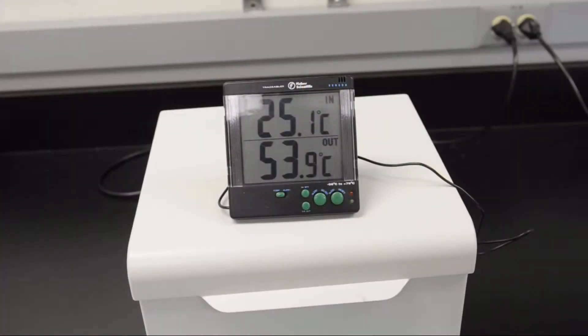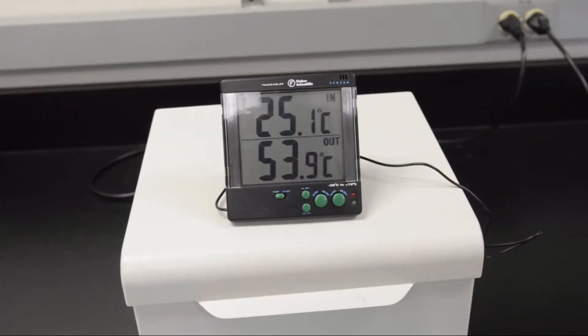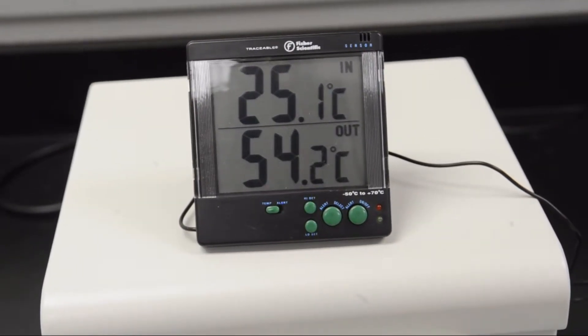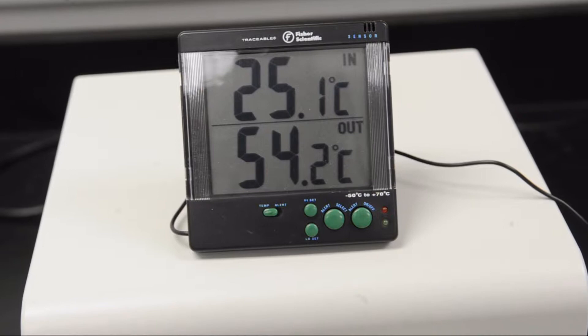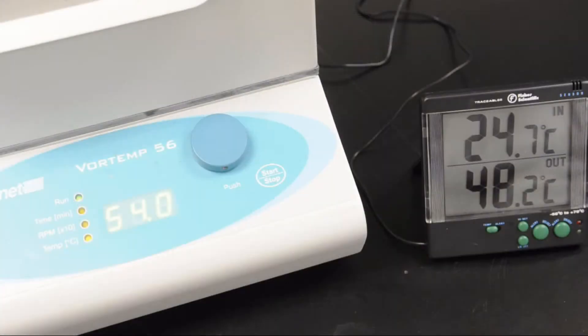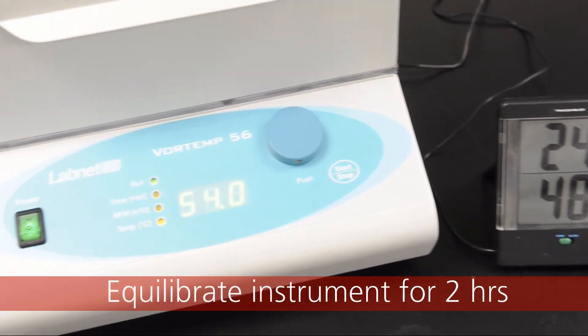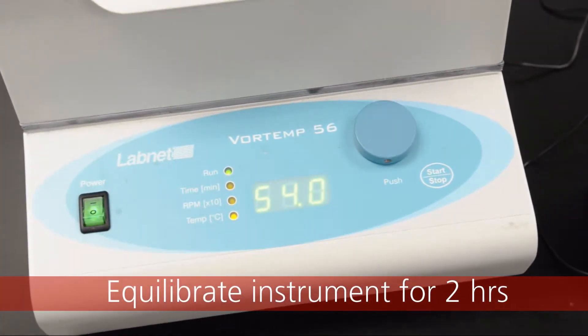The digital temperature meter has an in and out display. The in value is the temperature at the meter itself, and the out value is the temperature at the probe. After setting the temperature of the Vortemp instrument to 54 degrees C and shaking at 600 RPM,